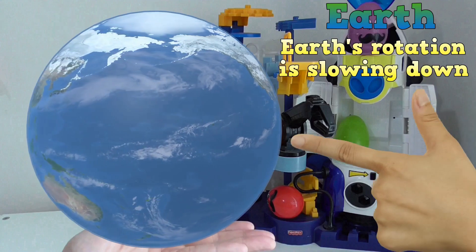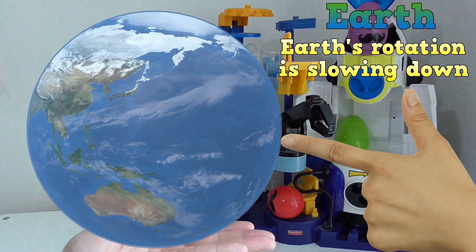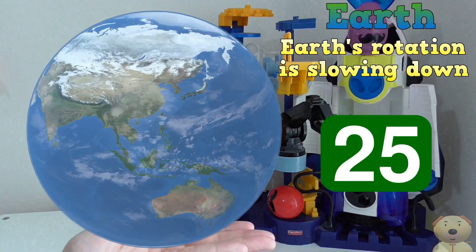The Earth's rotation is slowing down over time. So in about 104 million years time, a day on Earth will go from being 24 hours to 25 hours! Whoa!